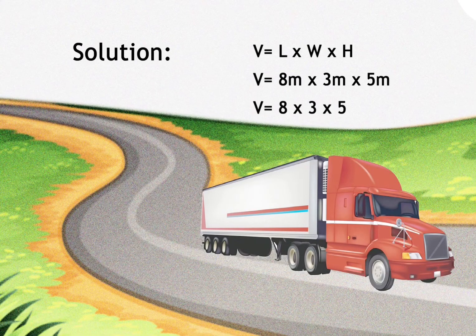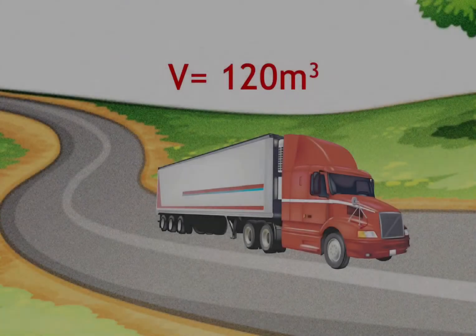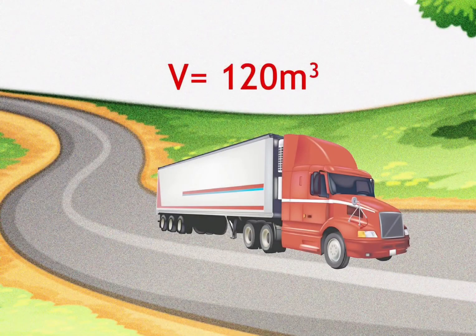Here's the solution. Volume equals length times width times height, so volume equals 8 times 3 times 5. The volume of the trailer is 120 cubic meters.